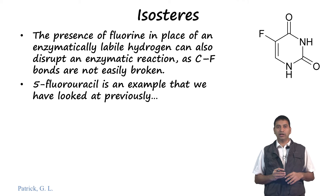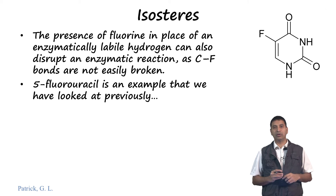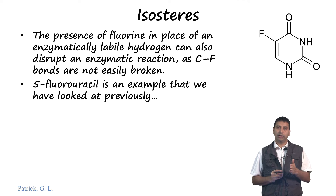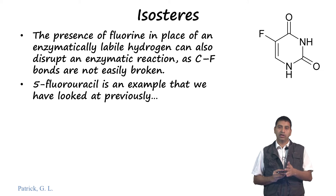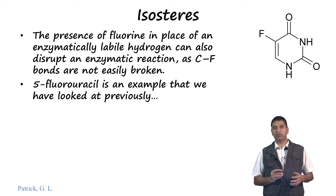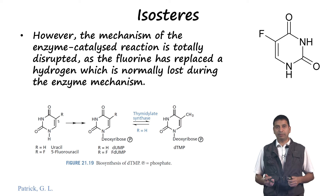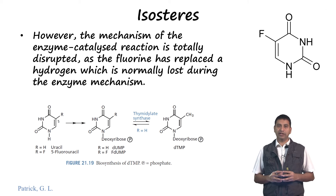The presence of fluorine is also useful when we are looking at enzymatically labile hydrogens. If we want to disrupt an enzymatic reaction where the carbon-hydrogen bond is broken, we could replace it with a carbon-fluorine bond. We have already looked at this molecule called 5-fluorouracil. Because we are replacing hydrogen with fluorine, the mechanism of the enzyme-catalysed reaction is disrupted.